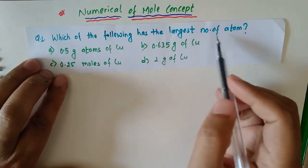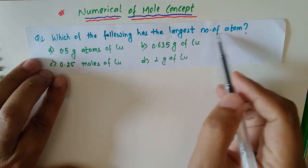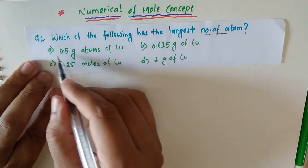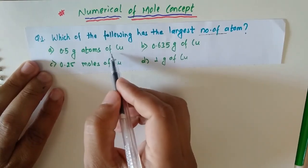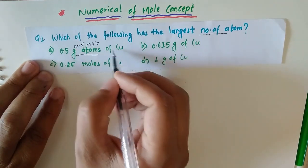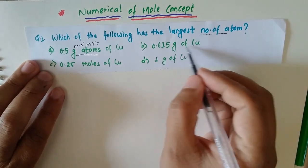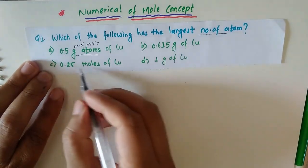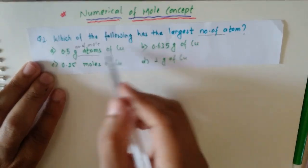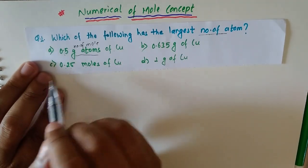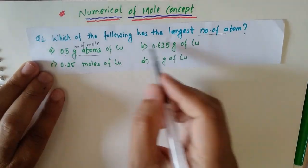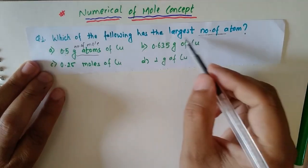First question: which of the following has the largest number of atoms? We have to calculate the number of atoms. The options are: (A) 0.5 gram atoms of Cu — gram atoms means number of moles, so 0.5 moles of Cu; (B) 0.635 gram of Cu; (C) 0.25 moles of Cu; and (D) 1 gram of Cu. The four options are in different units, so we must convert all to the same unit.